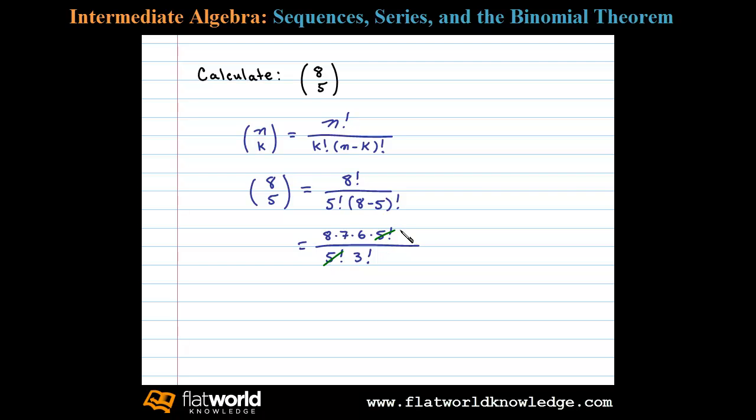And we have 8 times 7 times 6 in the numerator, and 3 factorial is 3 times 2 times 1, or 6. And so you can see 6 cancels here.